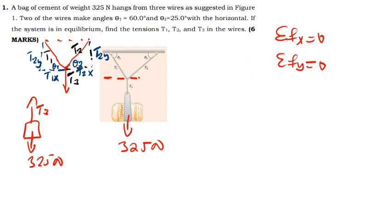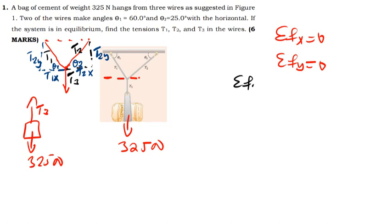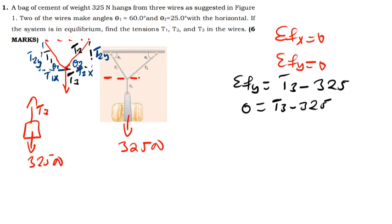Now I'm going to solve for T3 first, which is straightforward using just the bag. The summation of forces in the y-direction gives: T3 minus the weight 325 Newtons equals zero. Shifting 325 to the other side, T3 equals 325 Newtons.